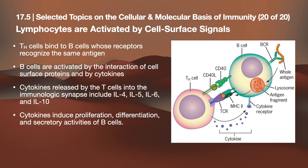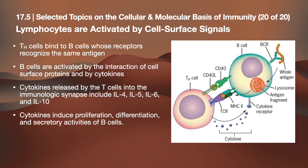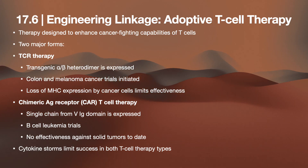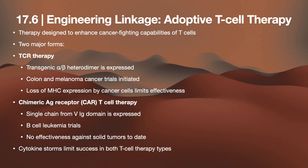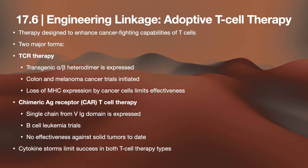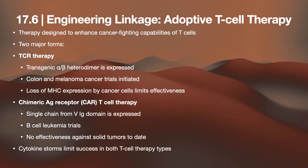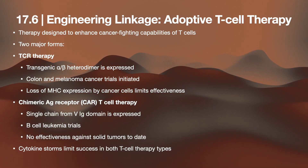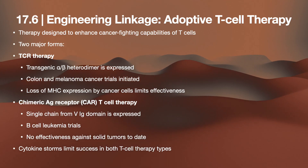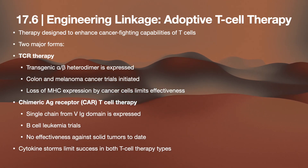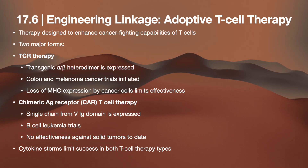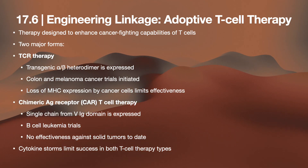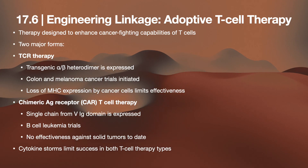Adoptive T cell therapy is designed to enhance cancer-fighting capabilities of T cells and has two major forms: TCR therapy using transgenic alpha or beta heterodimers expressed in colon and melanoma cancer trials, limited by loss of MHC expression by cancer cells; and chimeric antigen receptor (CAR-T) cell therapy, where a single-chain variable fragment (scFv) antibody domain is expressed, with B cell leukemia trials showing promise but no effectiveness against solid tumors to date. Cytokine storms limit the success rate of both T cell therapy types.